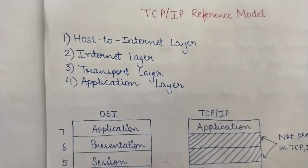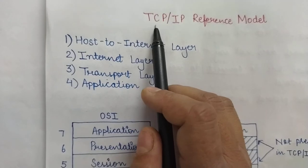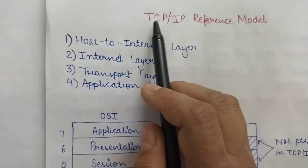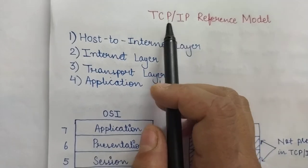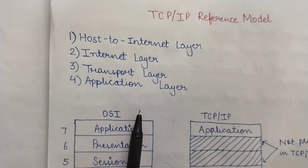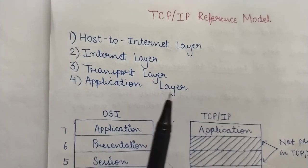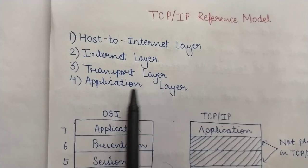In the previous video we saw all the layers of the OSI reference model. Today we are going to see the layers of the TCP/IP reference model — Transmission Control Protocol Internet Protocol: T for Transmission, C for Control, P for Protocol, and IP stands for Internet Protocol. As compared to the OSI reference model, the TCP/IP reference model has only four layers, whereas the OSI reference model has seven. The four layers are: the host-to-network layer, the internet layer, the transport layer, and the application layer.